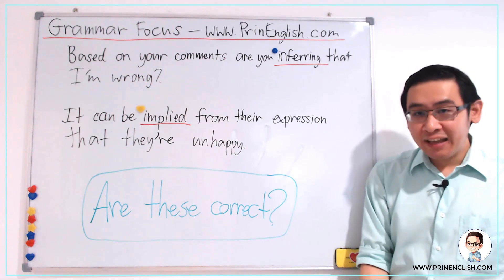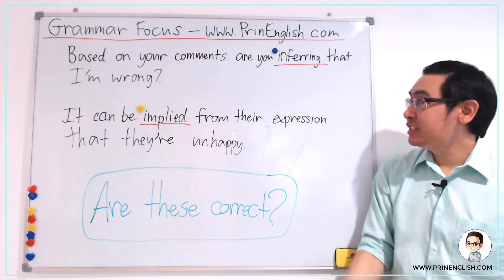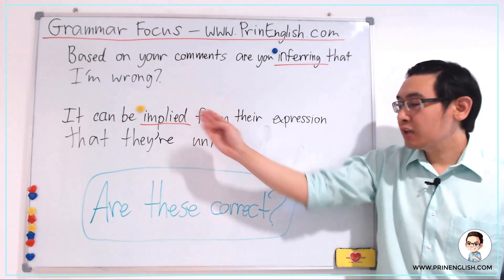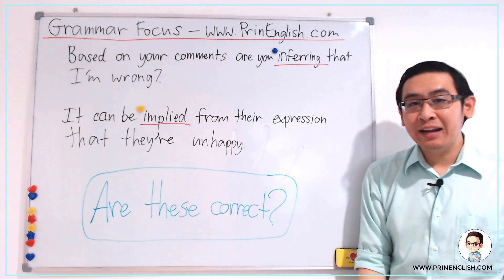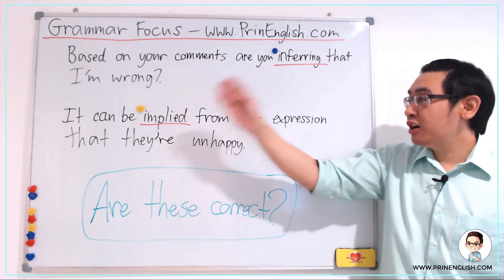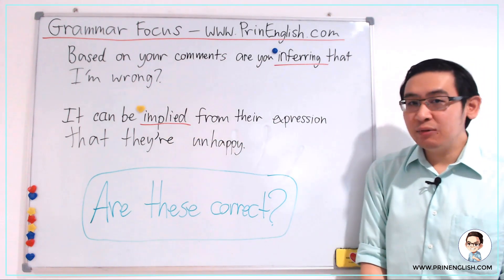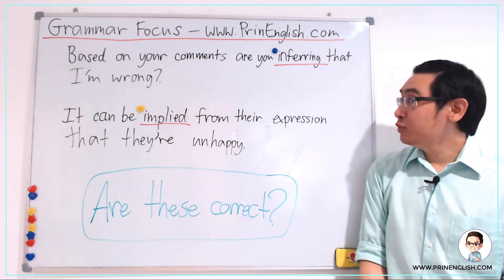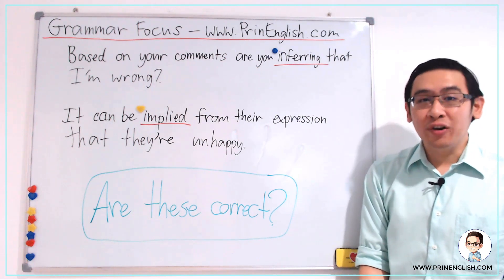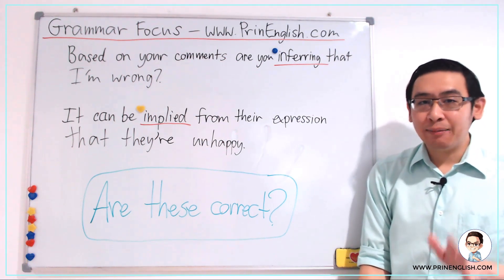So before we begin, let's look at these two sentences and focus on the words with the red underline — the one with the blue dot and the yellow heart — and see whether these words are correctly used or not. You can pause the video if you need more time.